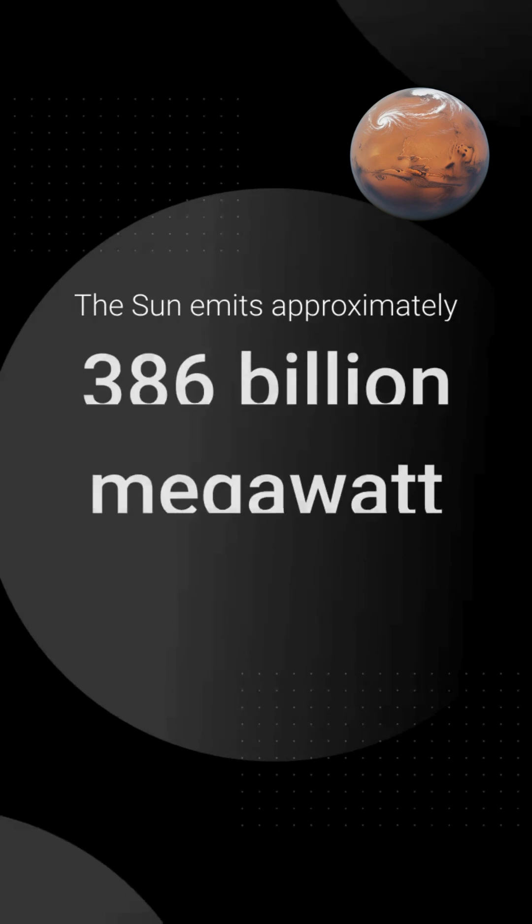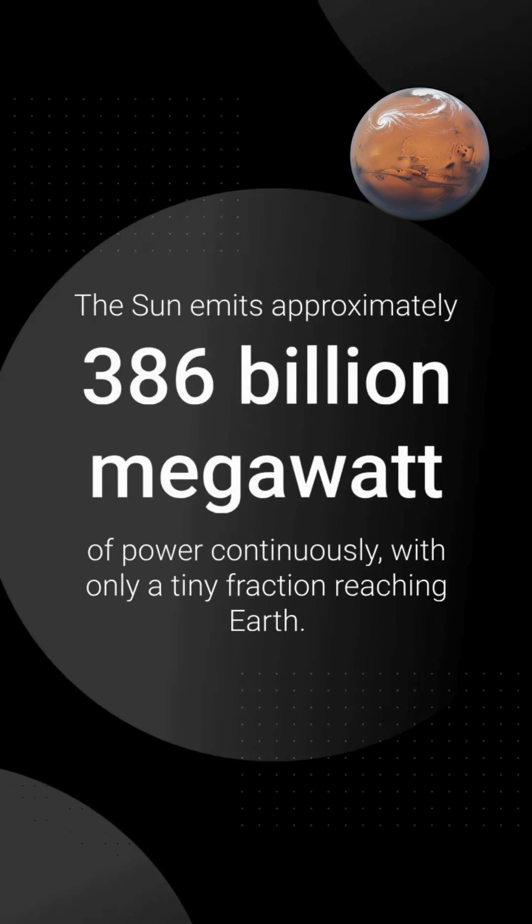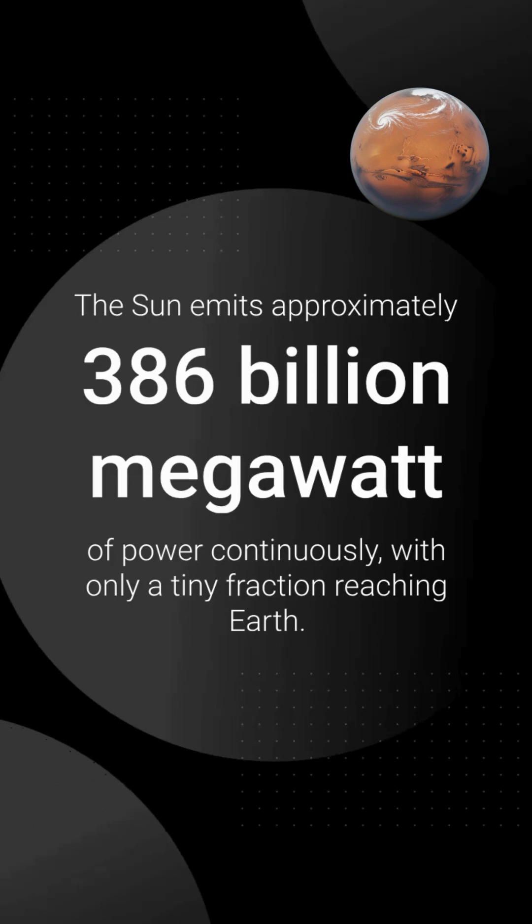The sun emits approximately 386 billion megawatts of power continuously, with only a tiny fraction reaching Earth.